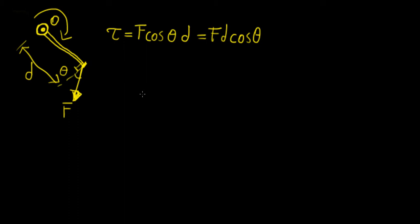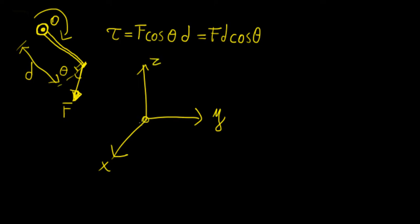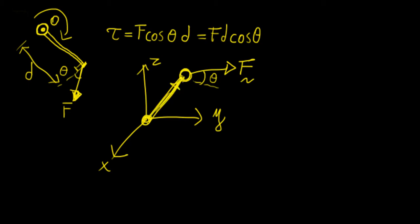This becomes troublesome when we scale up to three dimensions. Let's say we have x, y, and z, and some arm about the origin going out, with a force applied downward at some angle theta. In 3D, things become less clear. We denote the distance from the origin to the point at which the force is applied as the vector r.